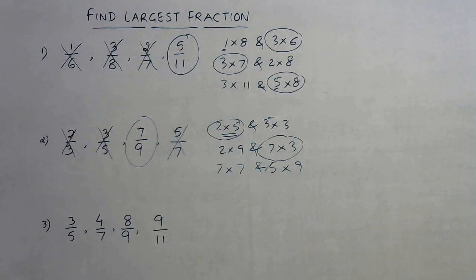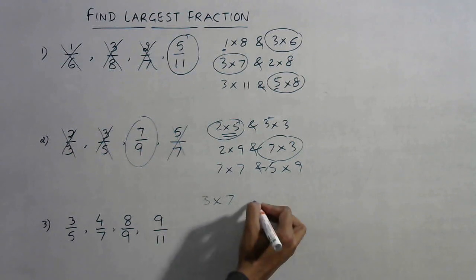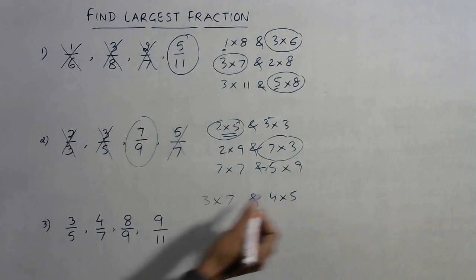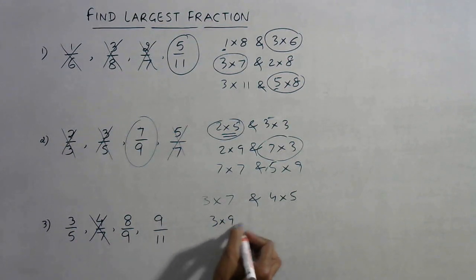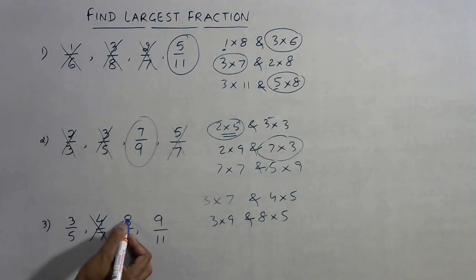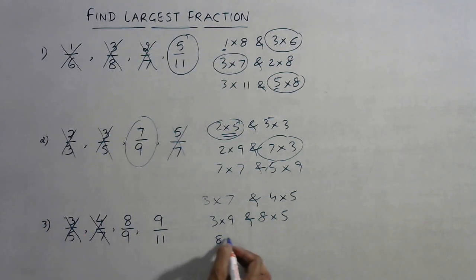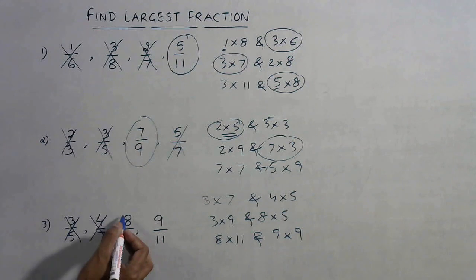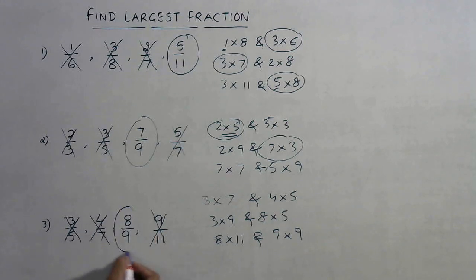Let's practice one more question. Compare the first two: 3 into 7 is 21, and 4 into 5 is 20. Since 21 is greater, 4/7 is discarded. Now compare 3/5 and 8/9: 3 into 9 is 27, and 8 into 5 is 40. The larger product retains 8/9, so 3/5 is discarded. Finally, 8 into 11 is 88, and 9 into 9 is 81. Since 88 is larger, we keep 8/9 as the largest fraction.